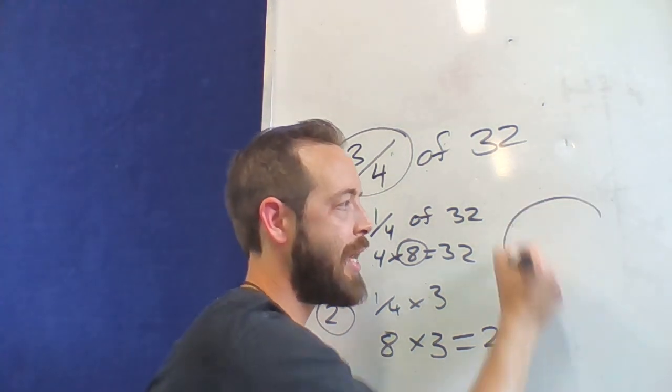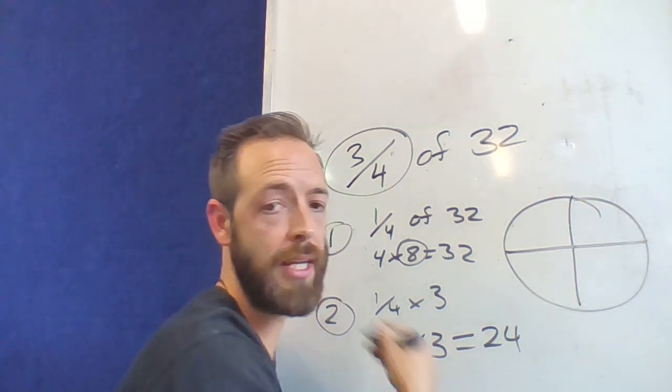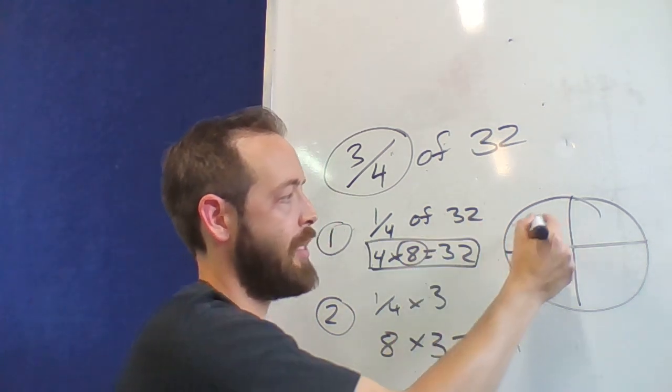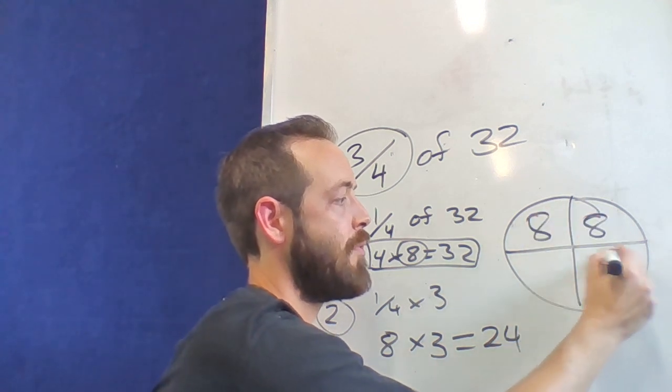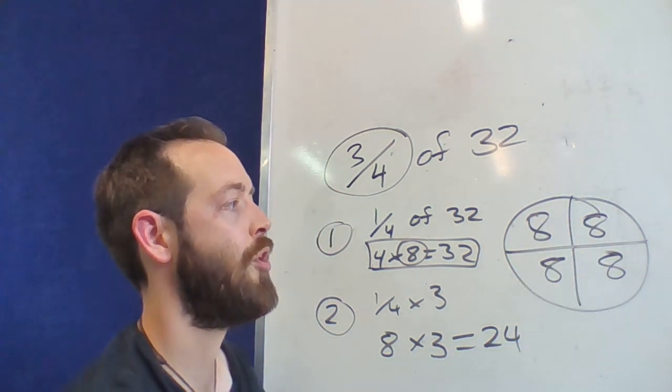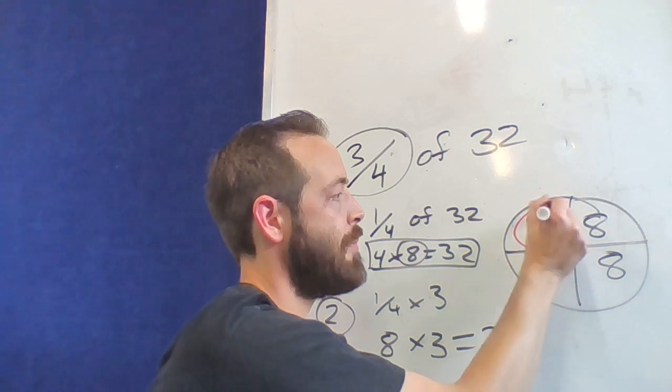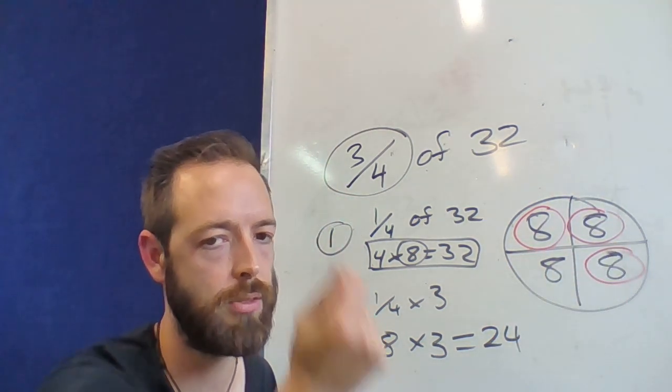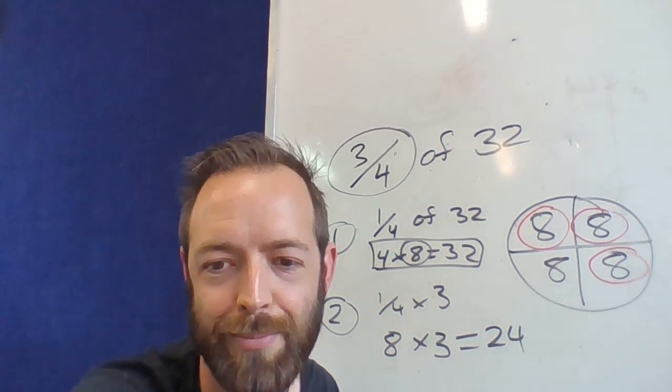If I was to then draw that out, if I have quarters and I had 32 in each, I'm going to use my times table knowledge to work out that each one has eight, and then once I've got my quarters, I'm then only multiplying three of them. Oh, did you see that colour change? Snap. That's all from me. Bye.